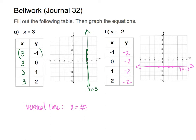Horizontal lines occur when you have an equation where y equals some sort of number. So when x equals some number it's a vertical line; when y equals some number it's a horizontal line. I just want us to refresh on these skills because they are going to become relevant when we start graphing lots of different things.